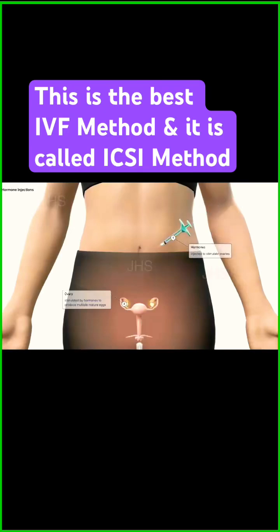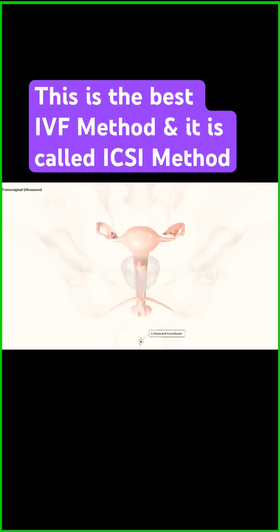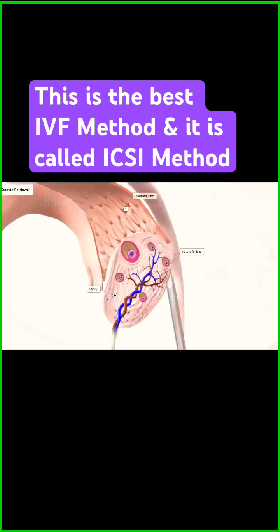During the best IVF method, ovarian stimulation medications are administered to induce the development of multiple oocytes. Mature eggs are then retrieved using ultrasound-guided transvaginal follicular aspiration to collect the eggs safely.